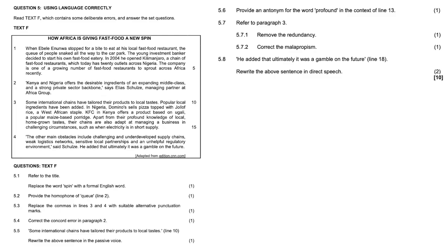Now everybody, as with every language question, just read the text only for context. So if you're battling with time, just head straight into the question. So refer to the title, replace the word 'spin' with a formal English word. So 'How Africa is Giving Fast Food a New Spin'—a new look, a new appeal, a new flavor, a new outlook, anything along those lines. I like appeal.